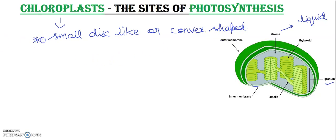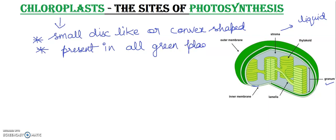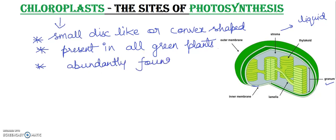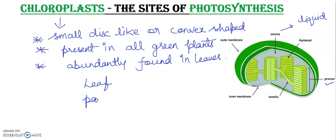Chloroplasts are present in all green plants and are abundant in leaves, which are adapted for photosynthesis. A leaf parenchyma cell may contain 20 to 40 chloroplasts.